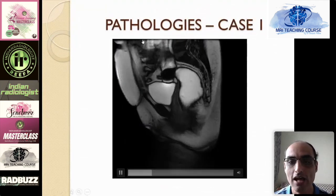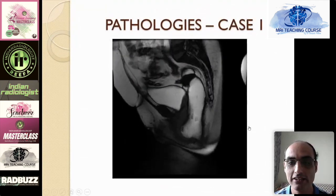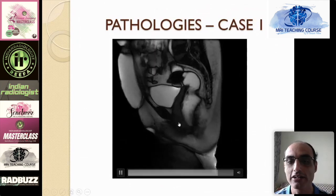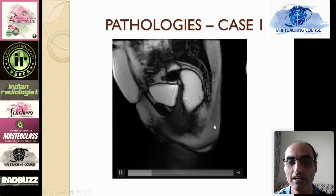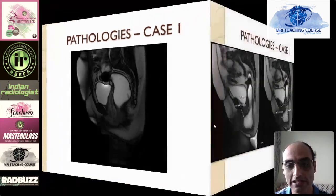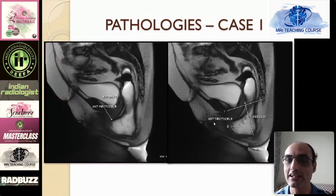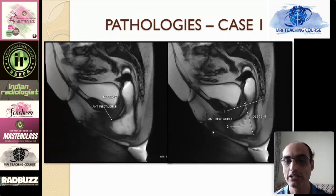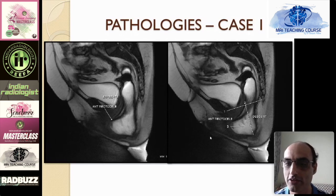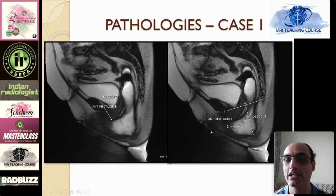In case one, as the patient starts straining, you see a bulge of the anterior rectal wall — that is a classical anterior rectocele, protruding anteriorly from the rectum. Rectoceles can be seen even in asymptomatic patients, but there are specific radiological criteria for clinical significance: any rectocele more than 2 cm in length that shows retained contents at the end of defecation is likely clinically significant. Rectoceles are classified as mild (0–2 cm), moderate (2–4 cm), and severe (more than 4 cm).